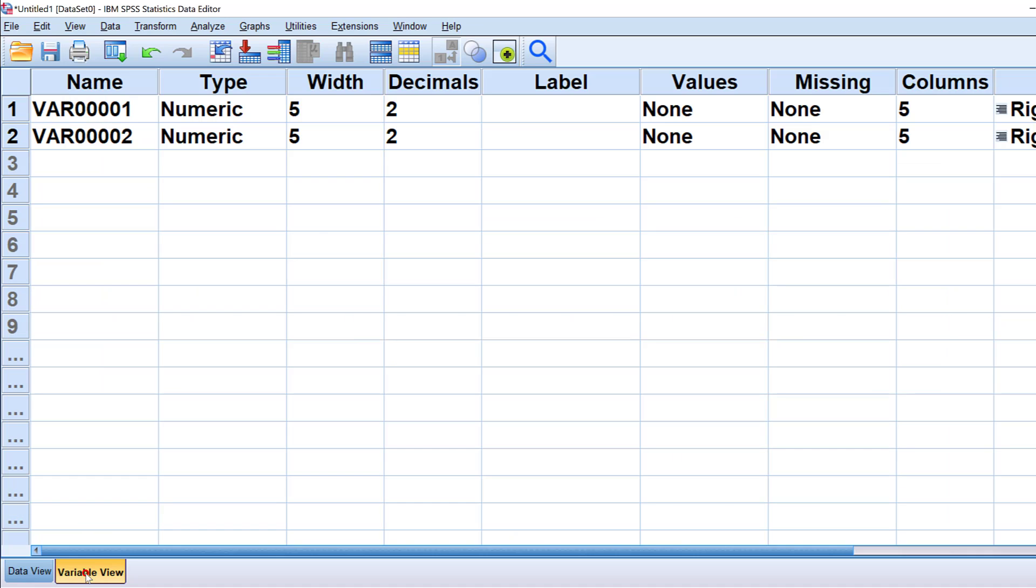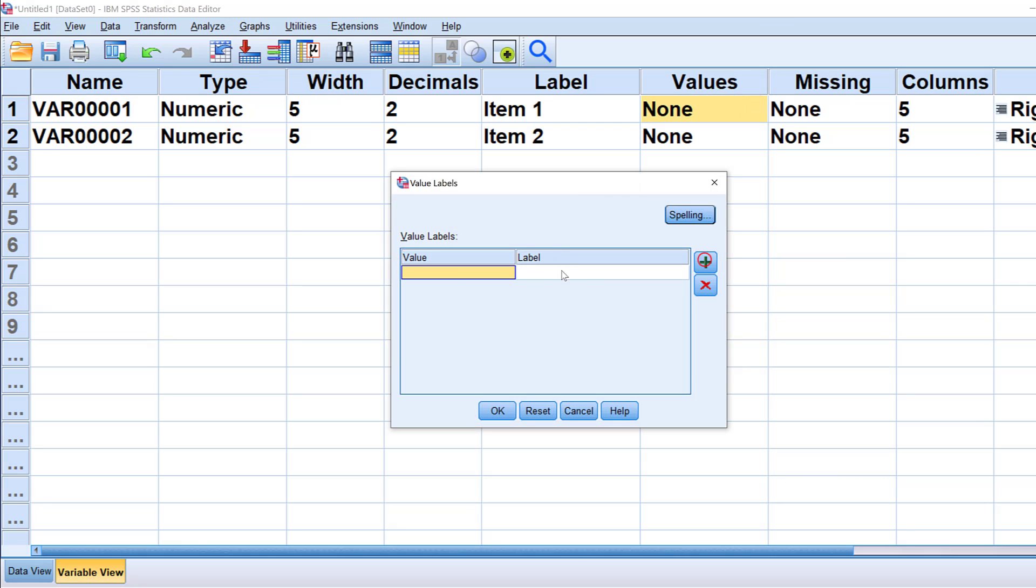Here I have these two variables. I go to the variable view and give them names like item one, item two. Here I can label them three-point Likert scale. I need to code it based on the codebook I explained to you. For example, one referring to low, two moderate frequency for instance, and three high frequency. Click OK.